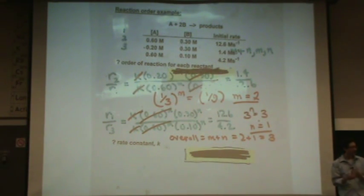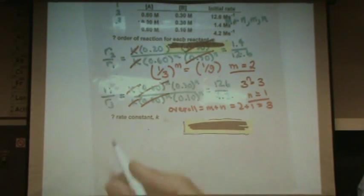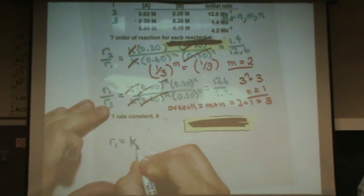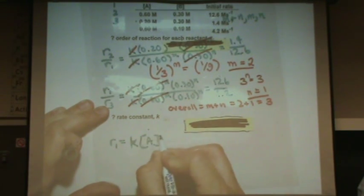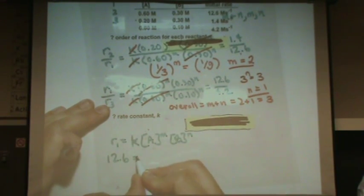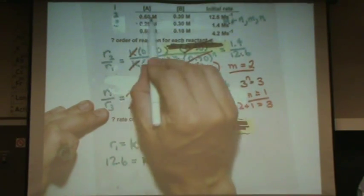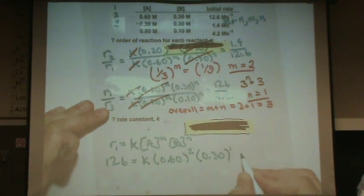To find the rate constant, you pick your favorite one of these three experimental data sets, whichever one you feel like. So we'll just pick one. The rate equation is: rate one equals k times [A] to the m times [B] to the n. So rate one is 12.6 molarity per second, equals k, times [A] = 0.60 to the second power, times [B] = 0.30 to the first power — reading from the first line — and I solve for k.